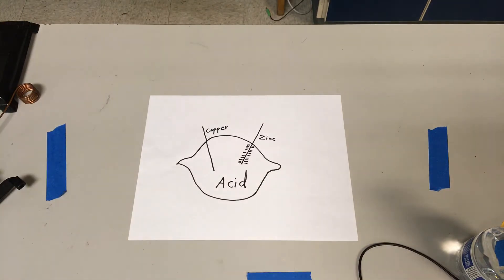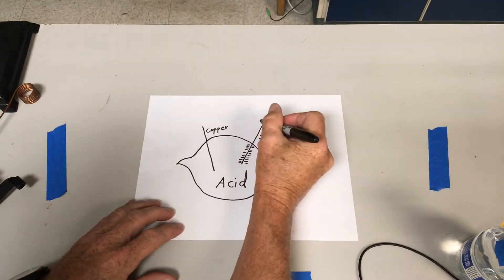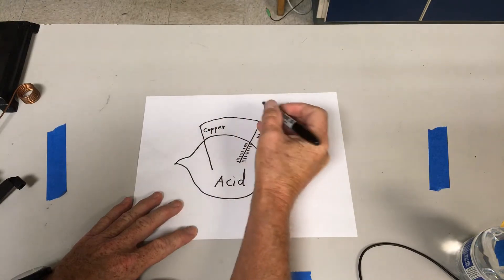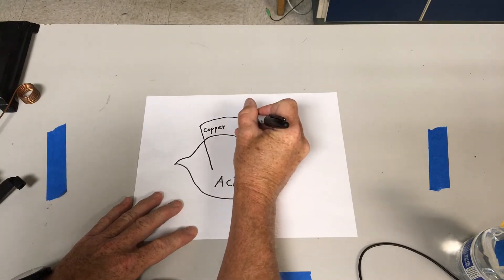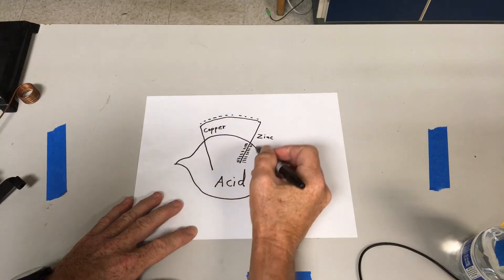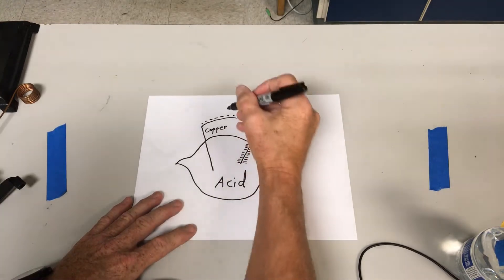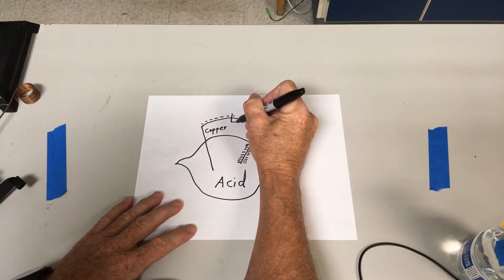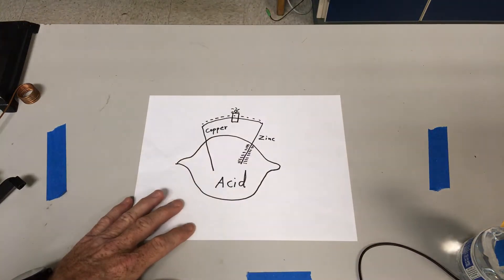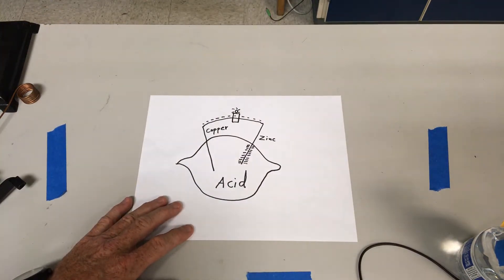Once we have these electrons where they don't want to be, if we give them a path to kind of get home—and that path would be a wire, which would make kind of a little electron highway where these electrons can start going home—if we put any kind of device in the path of these electrons like a light, well then those electrons will do some work and they'll make a light. Here would be how the light in your phone essentially works, because your phone has a battery.